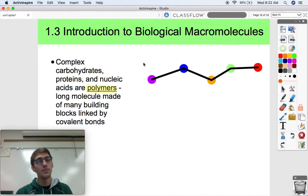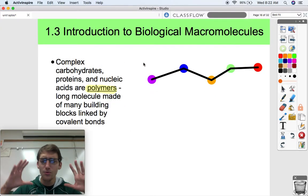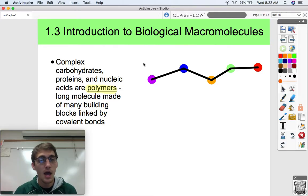So complex carbohydrates, proteins, and nucleic acids are very, very big molecules. They are called polymers, and you might have heard of this word before. Polymers are long molecules made of many building blocks linked by covalent bonds.